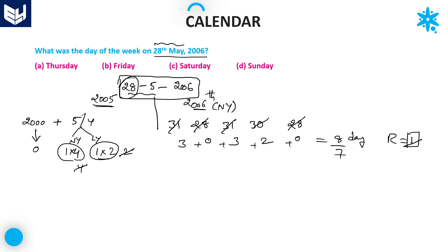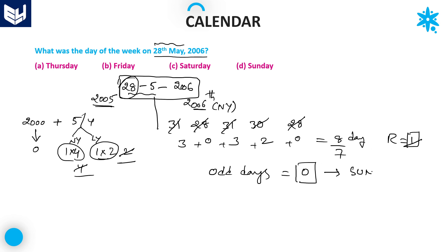Adding the right-hand side value of 1: 6 + 1 = 7. Since 7 days is exactly 1 week, the remainder is 0. When the number of odd days is 0, that day is Sunday — because the week always starts with Sunday. So Option D is the right answer.